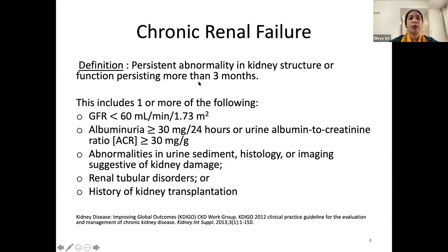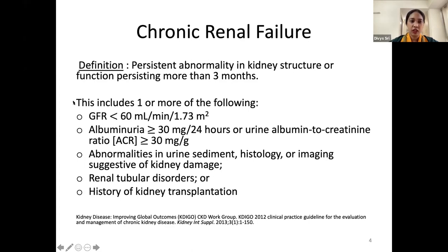The definition of chronic renal failure is a persistent abnormality in kidney structure or function persisting for a period of more than three months. If the abnormalities are present for less than three months, it does not fall into the category of chronic renal failure — the condition would still be considered acute in type.